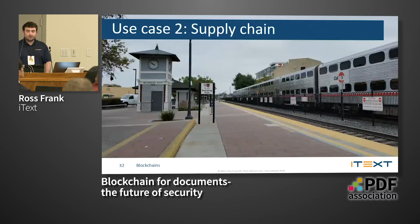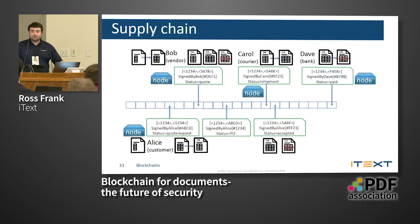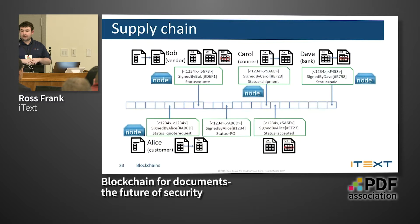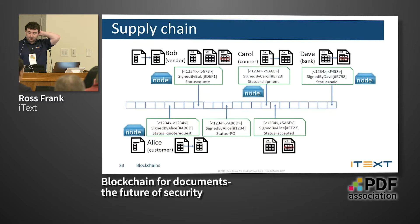Another use case is supply chain — when files need to go between companies, such as invoicing. Alice can send a quote request to Bob the vendor, who creates a quote and changes the status to 'quote.' This creates a PO that gets signed by Alice; Carol receives the PO and creates a shipment; Alice accepts it and sends payment to Dave. This is all done with the same document, and you can keep track of everything — how things change and how the workflow flows.